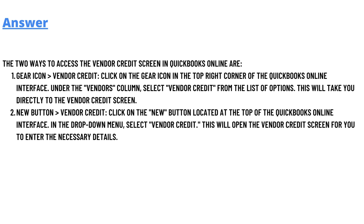Option two is the new button and vendor credit. Click on the new button, located at the top of the QuickBooks Online interface. In the drop-down menu, select vendor credit, and this will open the vendor credit screen for you to enter the necessary details.